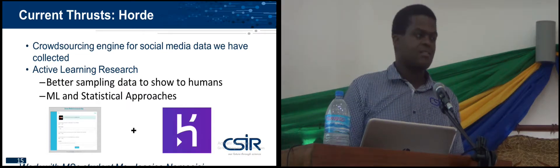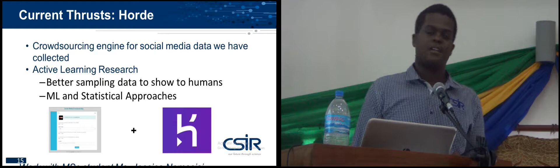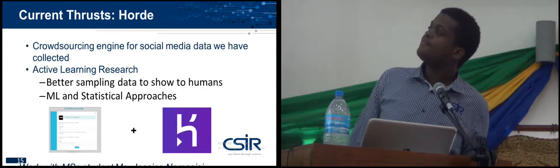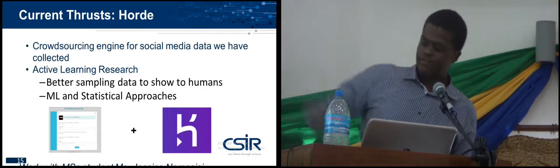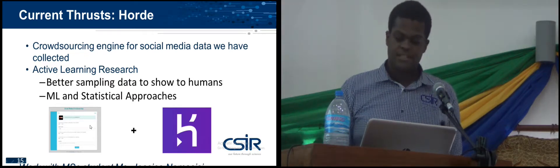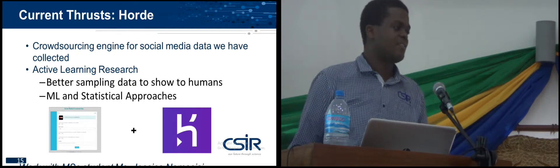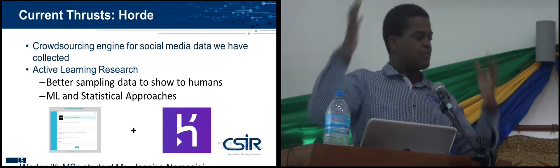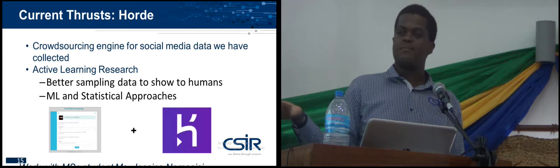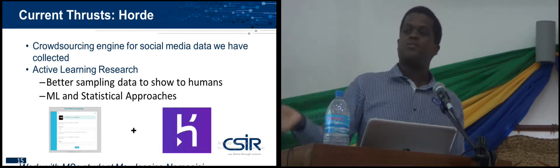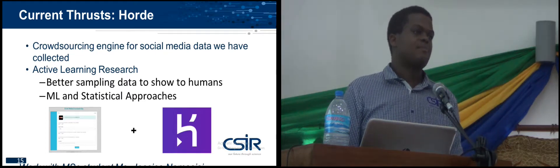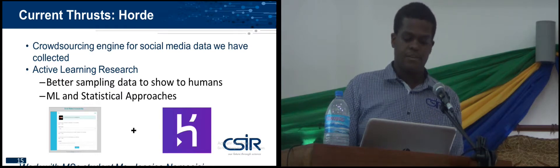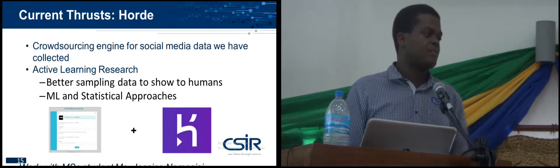One of our current research tools is Horde — a crowdsourcing engine we've been working on for this specific use case, connected to research on using active learning for better sampling. We have a website you can go to. We have all these social media posts in a bag, and you know what you've seen before and what people have tagged for you. Now you want to sample the next tweet to show a person for labeling, but you want to do that in a clever way rather than randomly, because it's quite a bit of work to get this data. You want every piece of information shown to somebody to be as useful as possible — a mix of machine learning and statistical approaches.